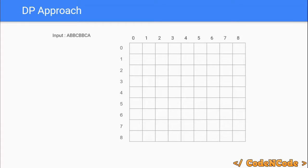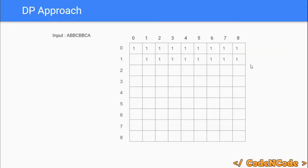We start by filling the 0th and the first row with 1. The 0th row represents empty substrings, which are always palindromes. The first row represents substrings of length 1 — every single-character substring is always a palindrome. So DP[1][1] is a single character substring, which is a palindrome. Similarly, DP[1][2] through DP[1][8] all represent single-character substrings, which are palindromes. That is why the entire 0th and first rows are filled with 1.